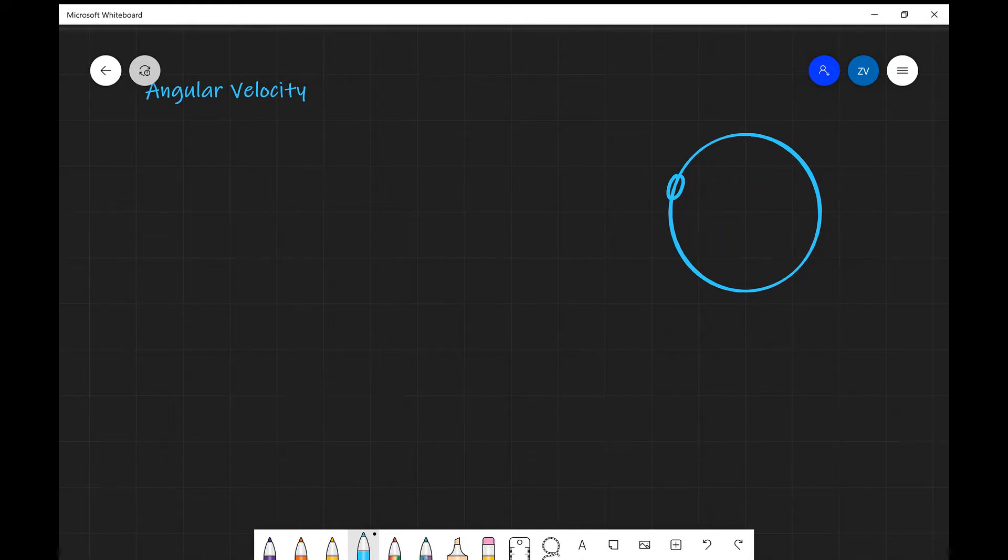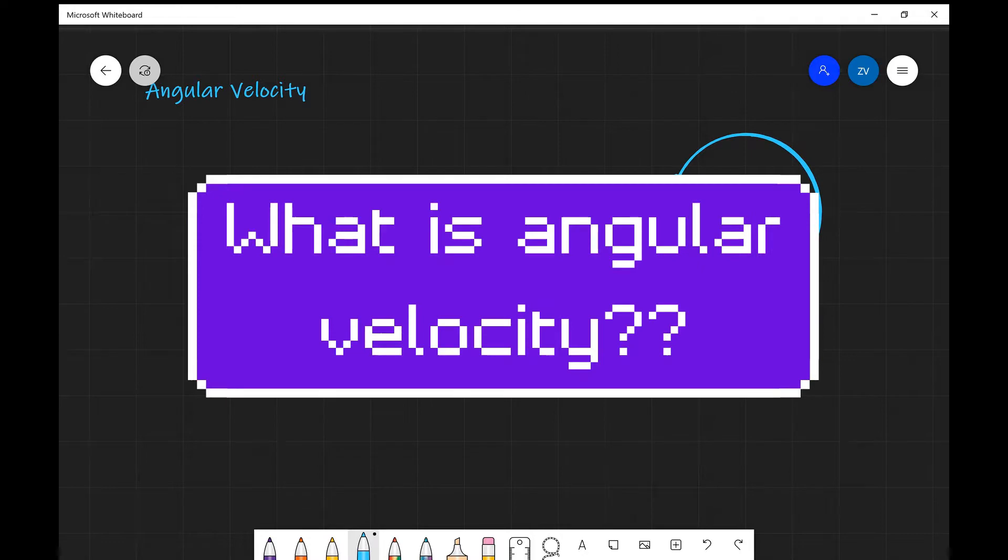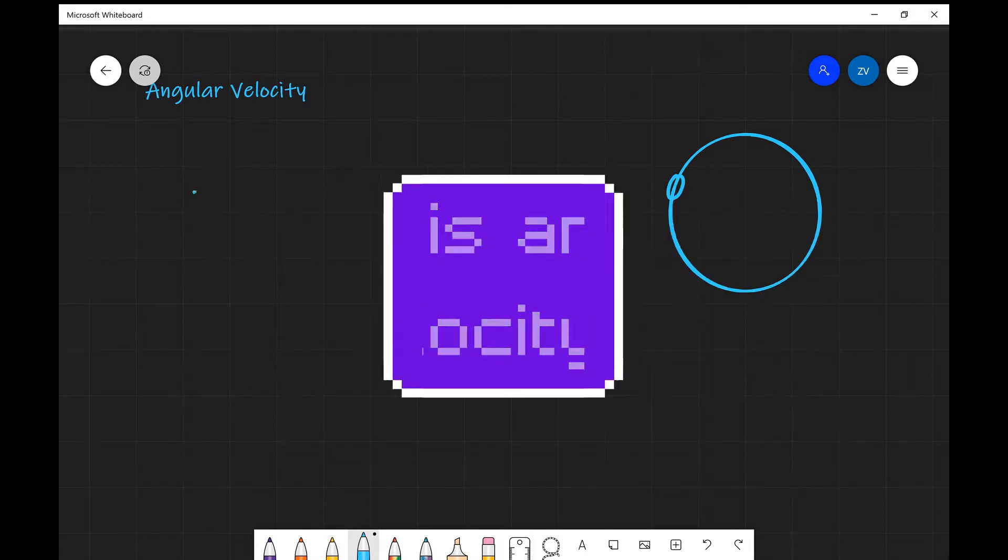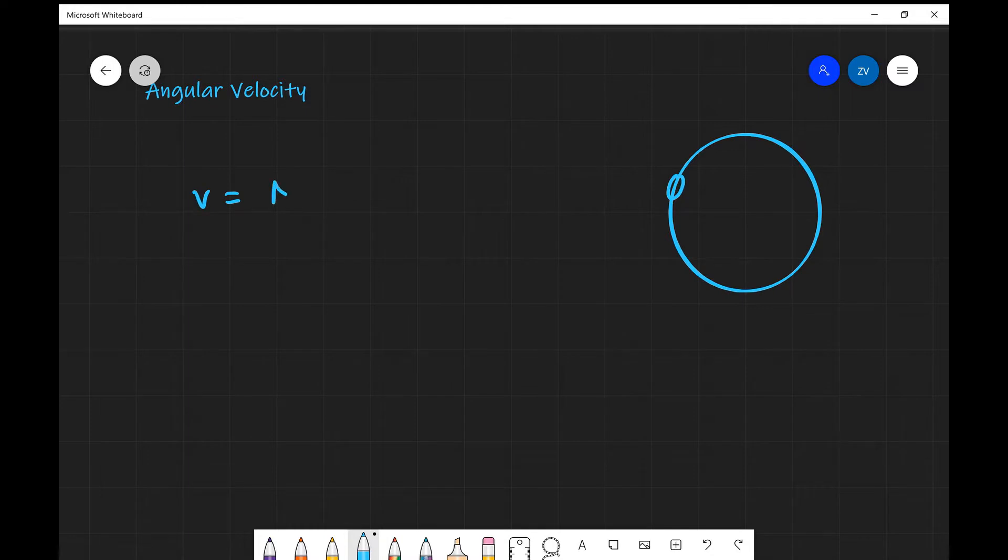Hi everyone and welcome back to ASFC Physics. What we're going to be talking about today is angular velocity. Now we know that in general the formula for velocity would be your change in displacement divided by your change in time, in other words the rate of change of displacement.